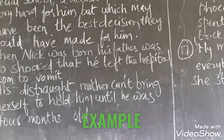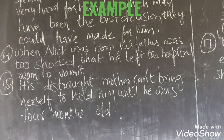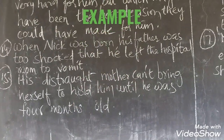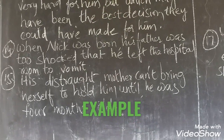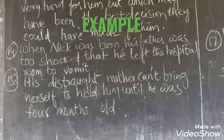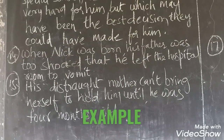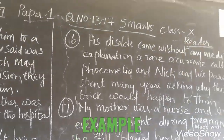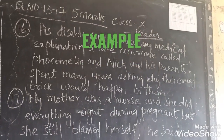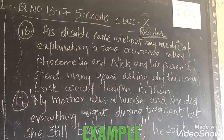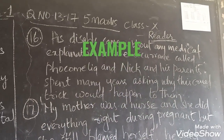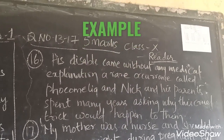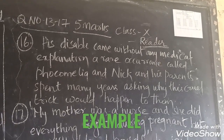See sentence 15: 'His distraught mother can't bring herself to hold him until he was 4 months old.' In this sentence also there is an error regarding tense — please find it out. Then look at sentence 16: 'His disabled came without any medical explanation, a rare occurrence called Focomelia, and Nick and his parents spent many years asking why this cruelty could happen to them.' Here there is a word which should be used in another form.